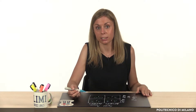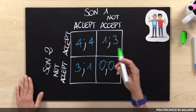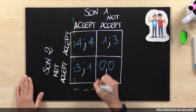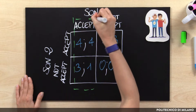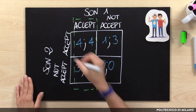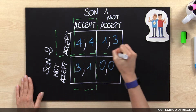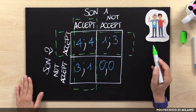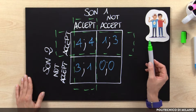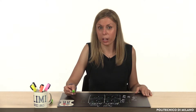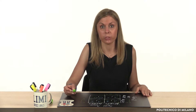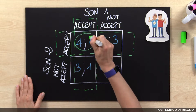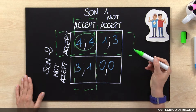In this game there are two dominant alternatives, because accepting is the best option for both of them. As a matter of fact, accepting for both sons is thereby also the Nash solution as well as the efficient solution.